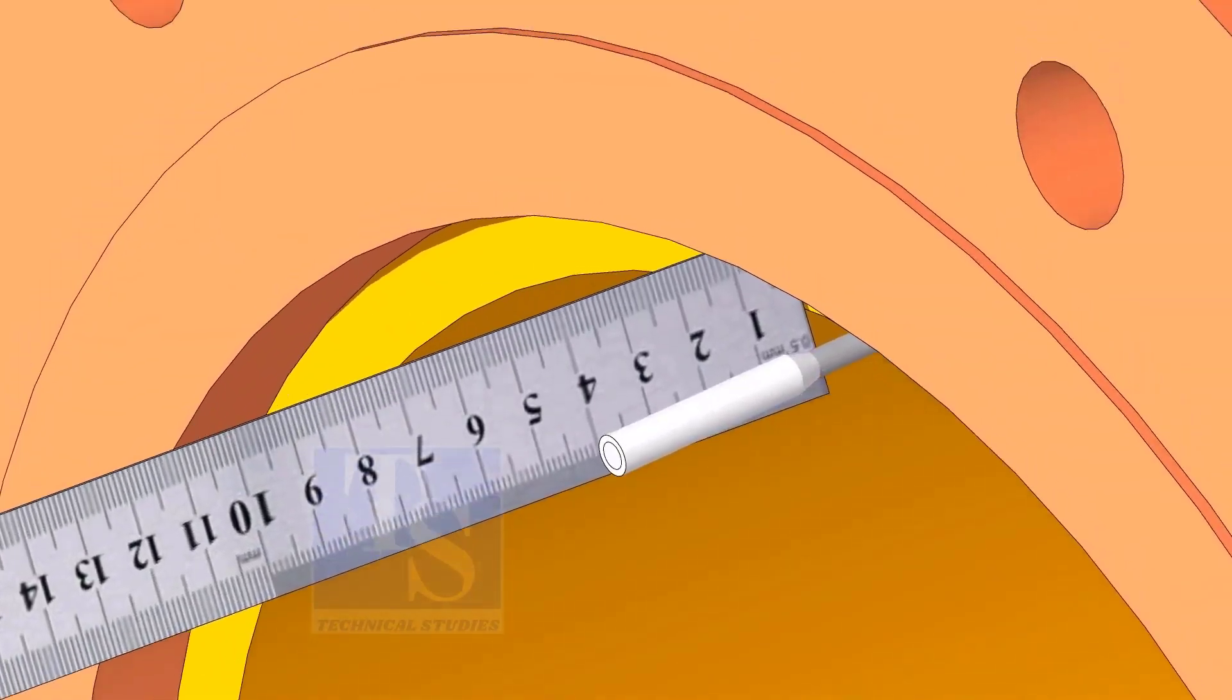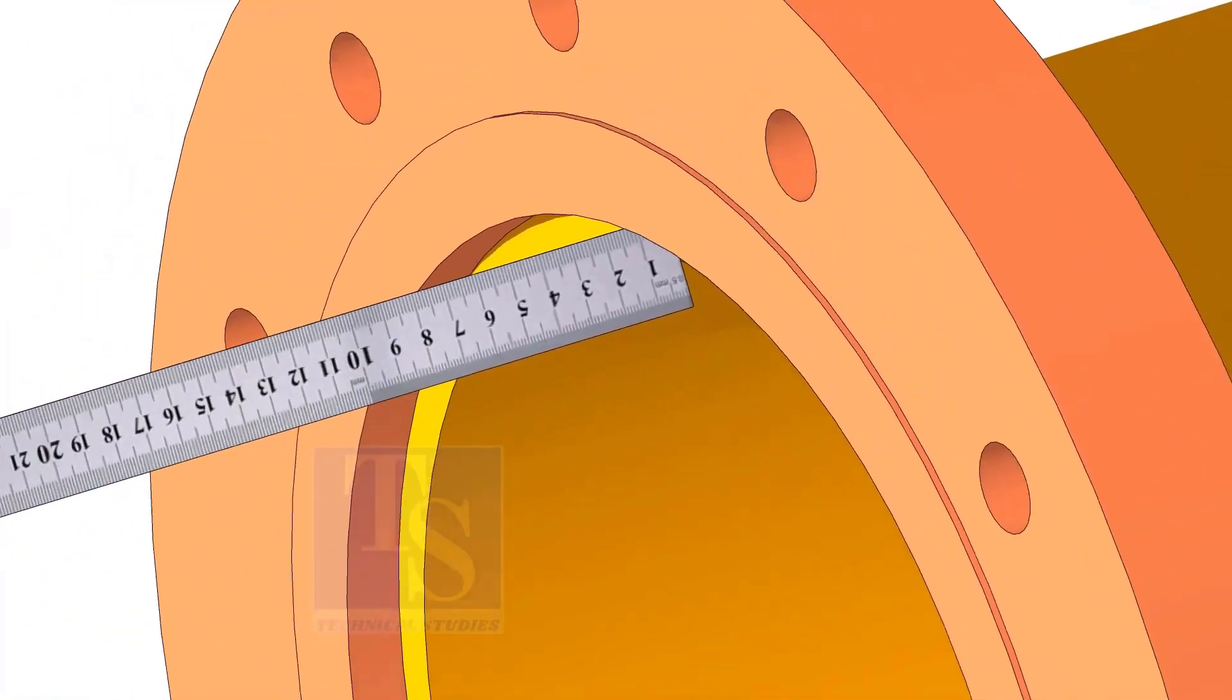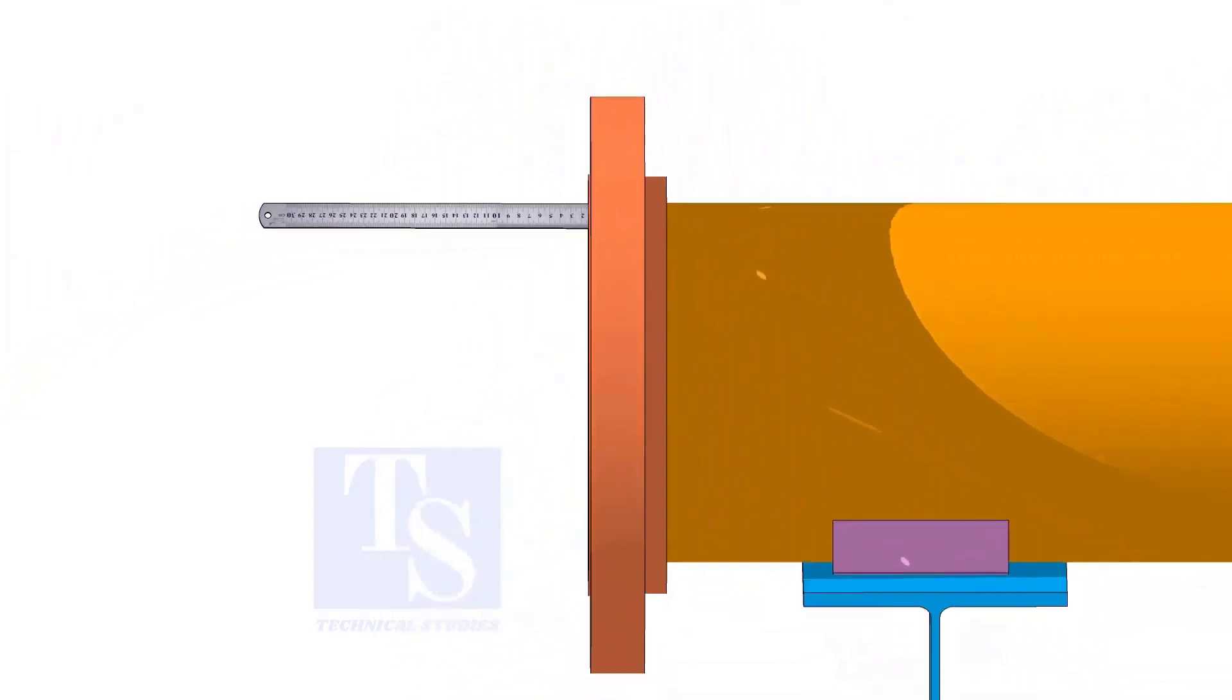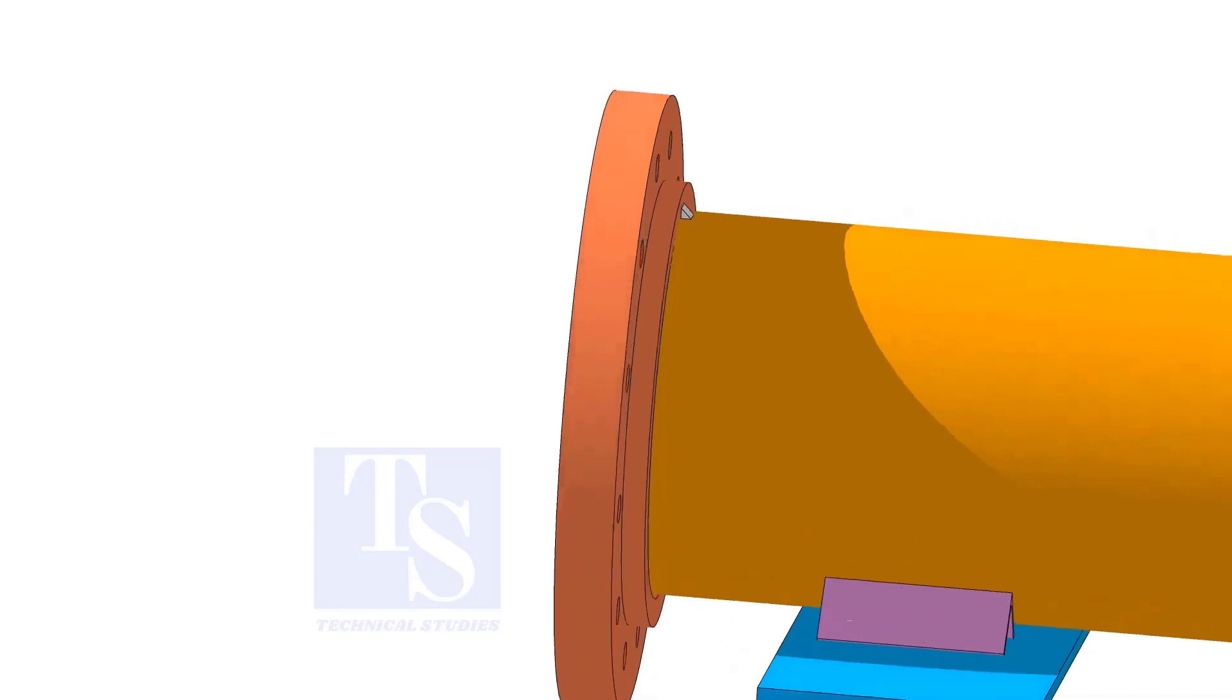Now, adjust the gap between the face of the flange and the pipe. Tack weld on the top side.